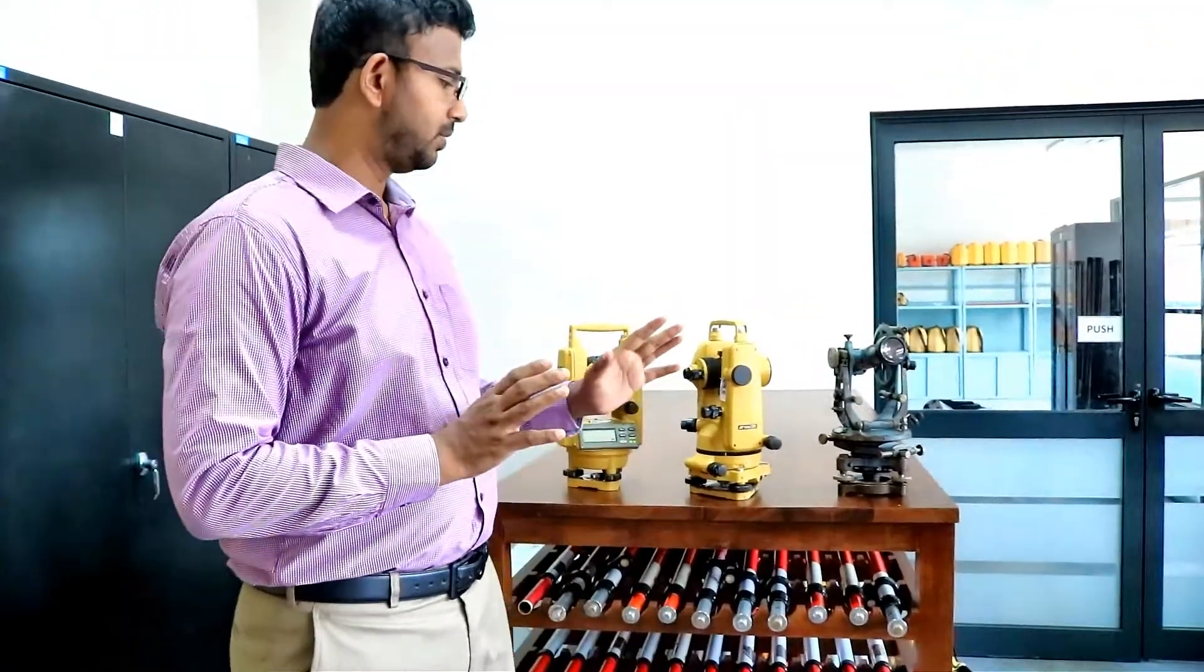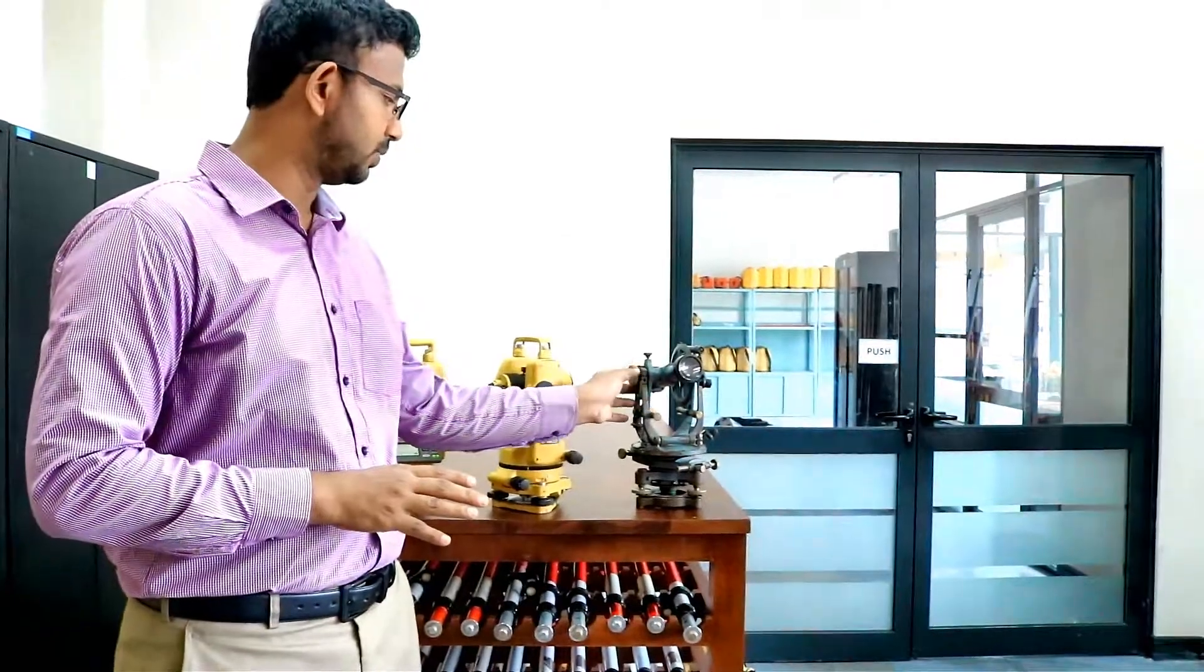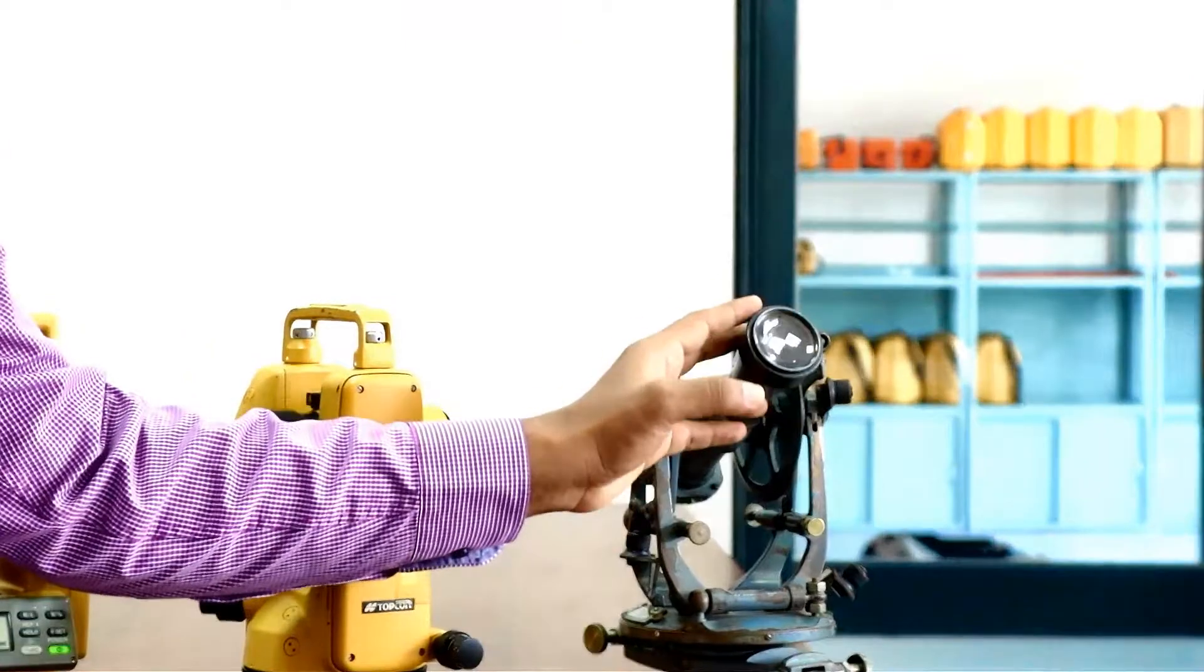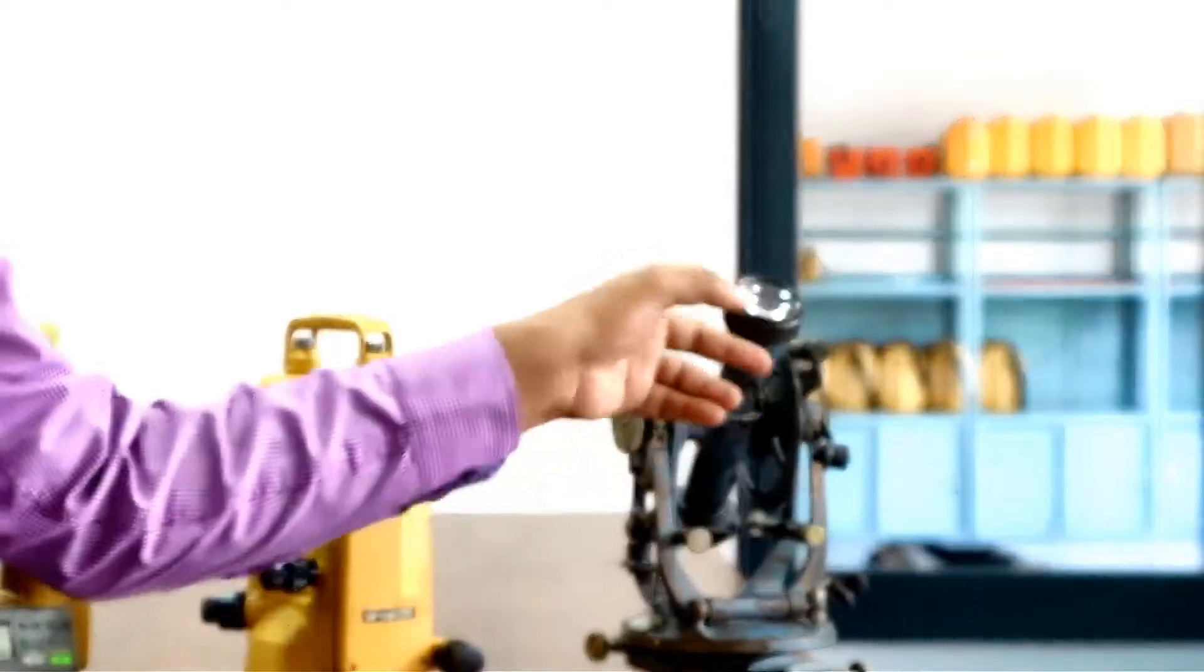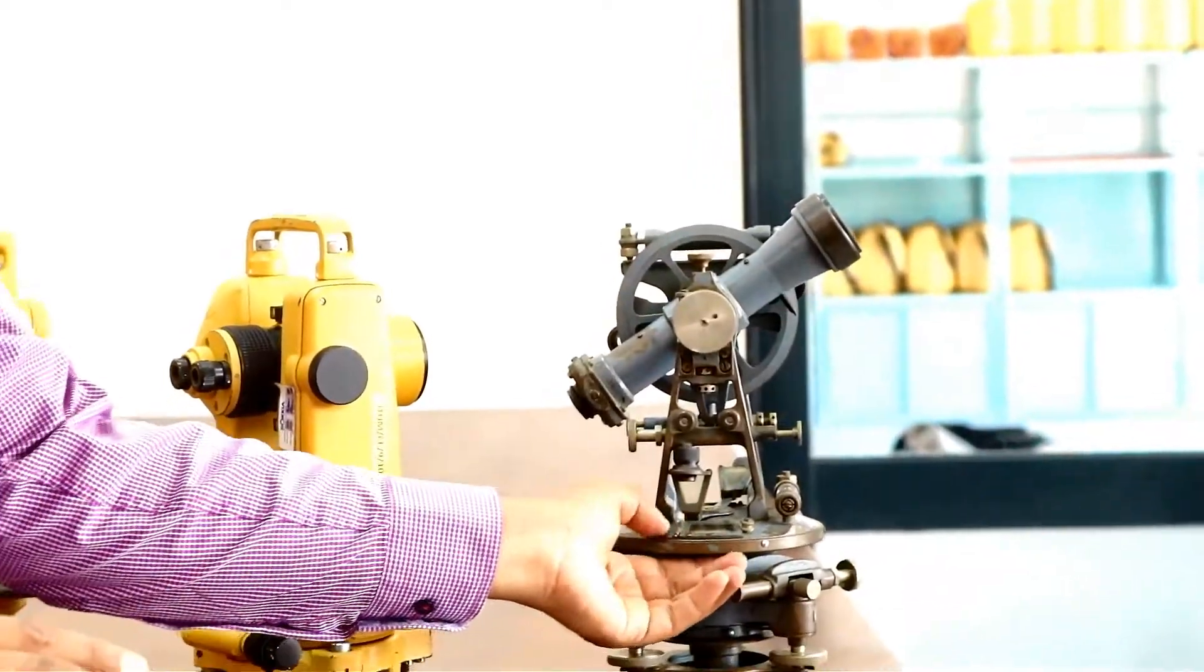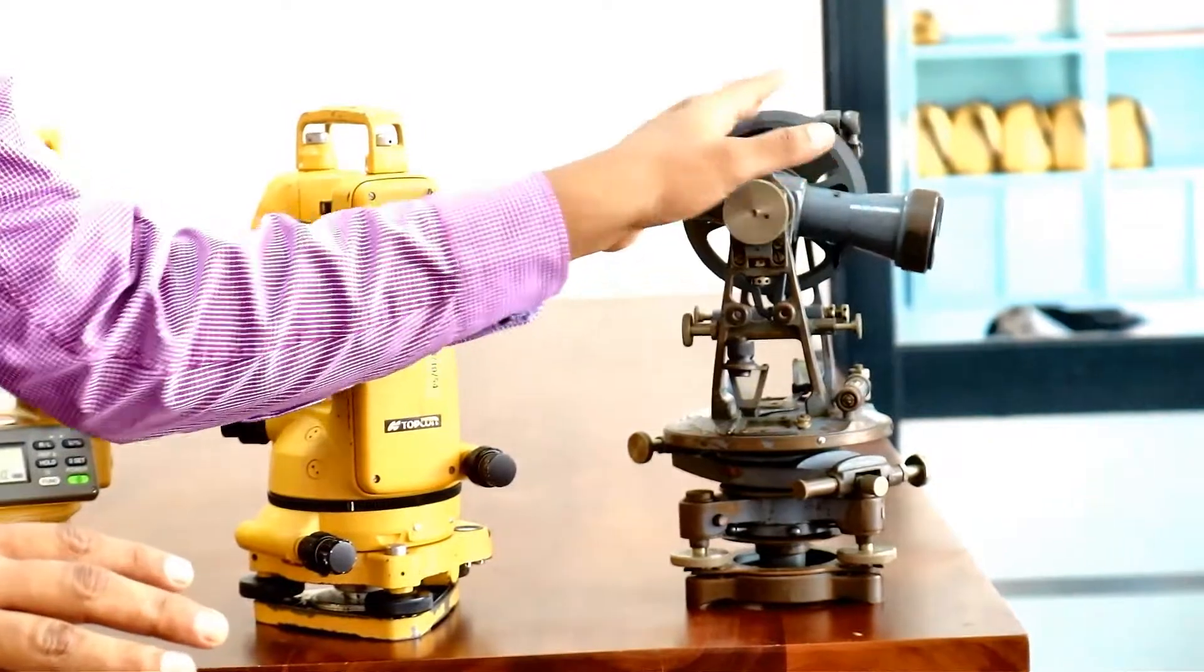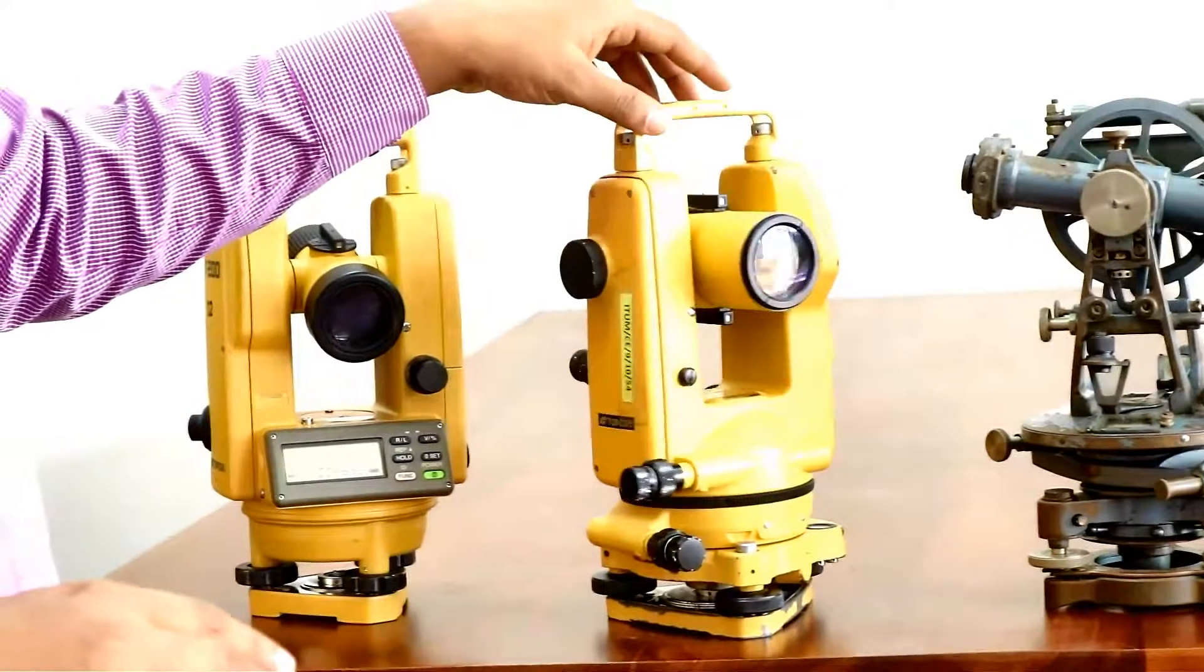Today we learned about four theodolites and the transformation of it. The first one is the vernier theodolite. There is no one to show you, but it is just similar to the vernier transit theodolite. And this is called vernier transit theodolite. So the name has come because this telescope can be transited a full round. And it has a separate horizontal circle and a vertical circle. Then the next generation is the micrometer theodolite.